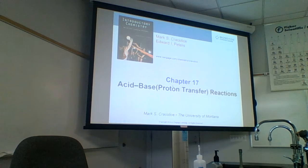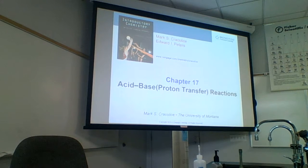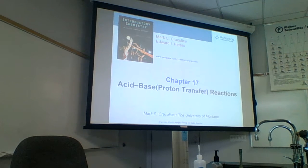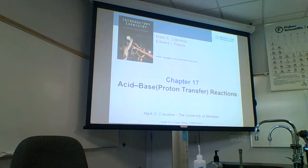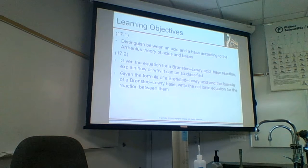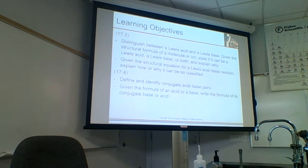Lewis is different. In Bronsted acid-base, the acid is the H-plus donor. The base is the H-plus taker — it takes the H-plus. The base is going to attack the acid and try to take the H-plus from it. This is Bronsted-Lowry.